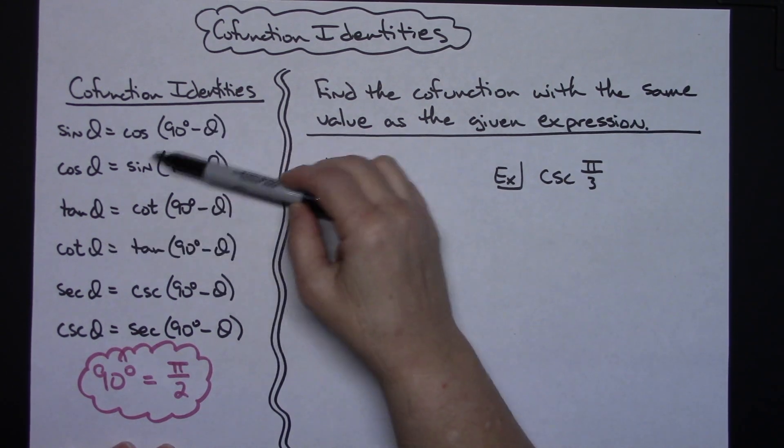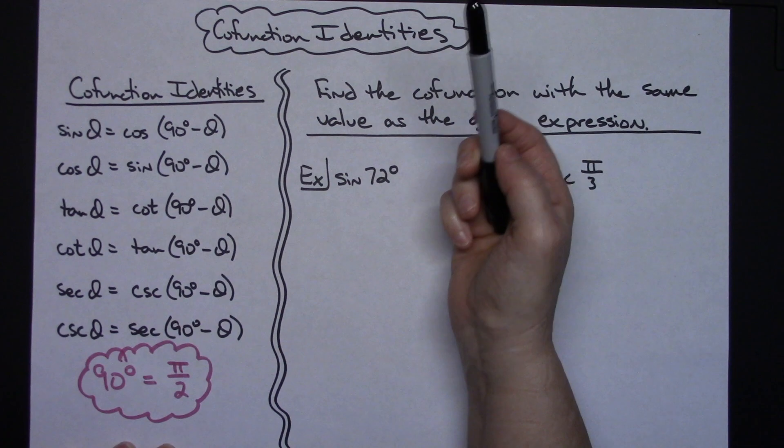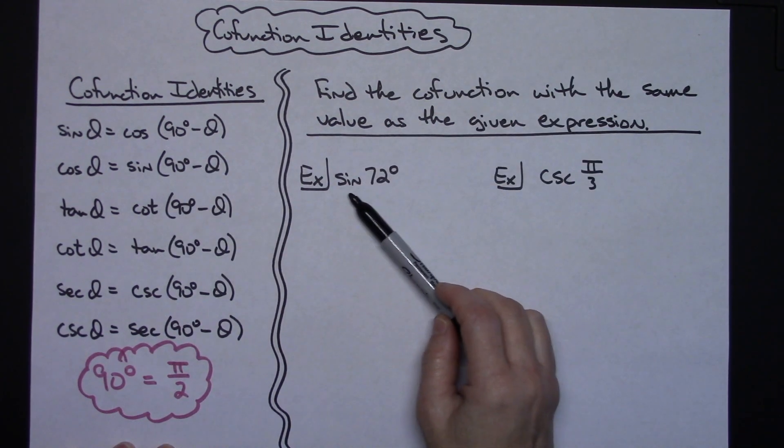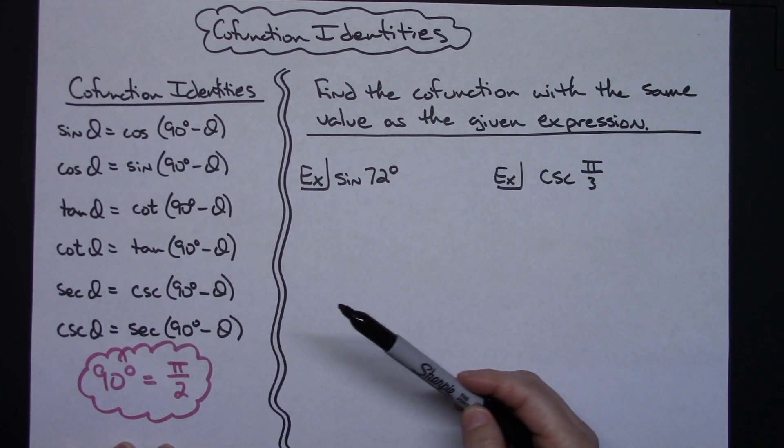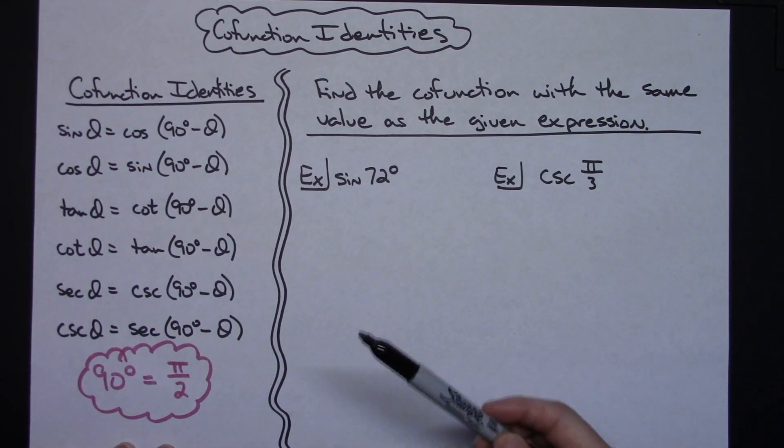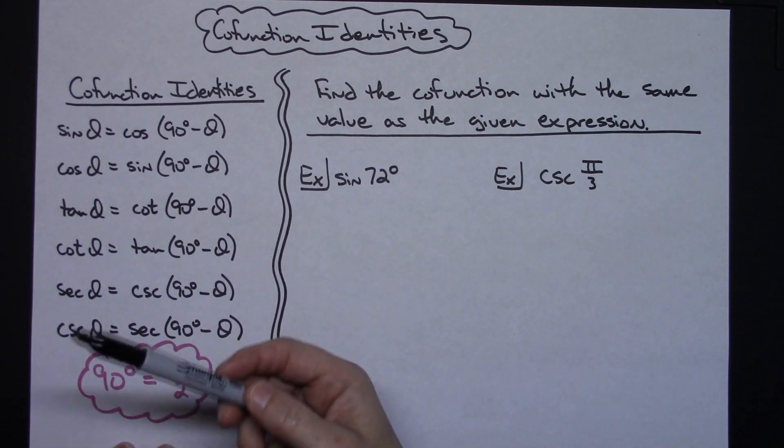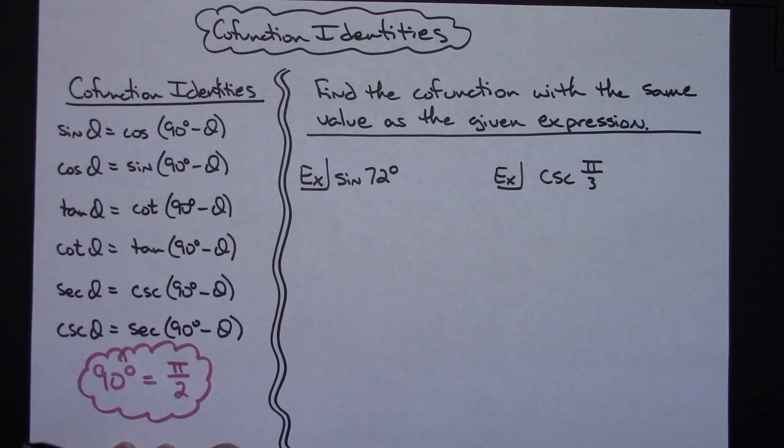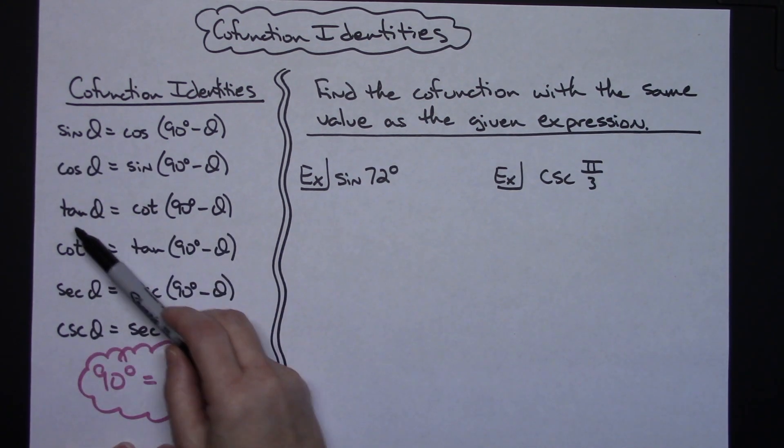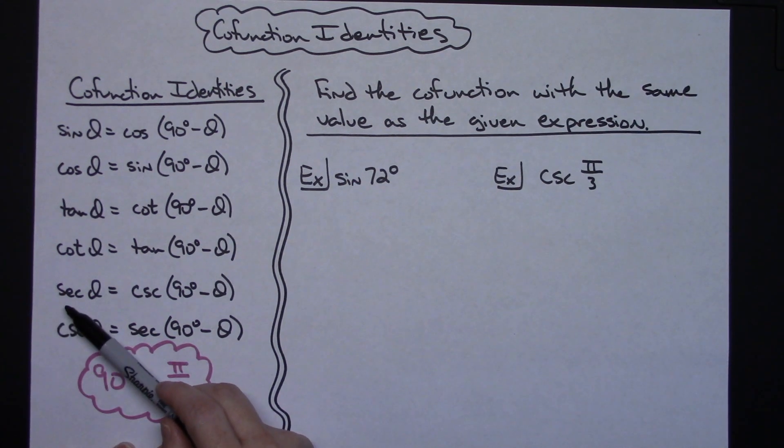So you would use these formulas if you were trying to find an equivalent answer. Like right here I've got sine of 72 degrees and let's say you needed to know what angle had the equivalent answer to that but in a cosine, because sine and cosine are cofunction identities. Tangent and cotangent are cofunction identities, as well as secant and cosecant.